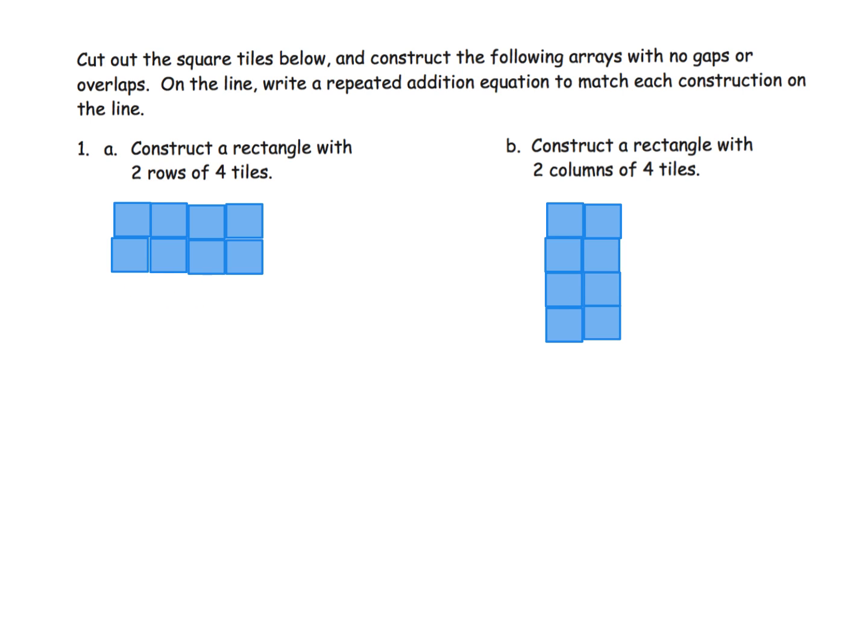The important thing we want our students to do is: are they able to read the words 'two rows of four' or 'two columns of four' and correctly build the rectangle? That's paramount — we really want students to know those vocabulary words, specifically rows and columns.